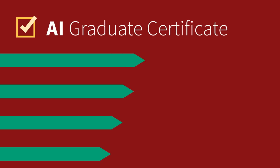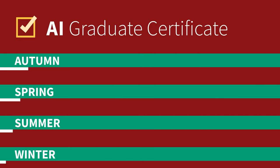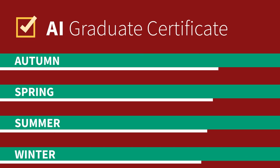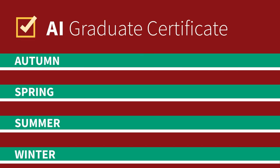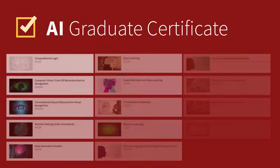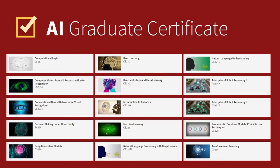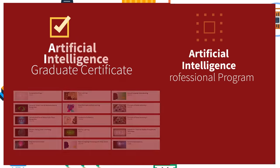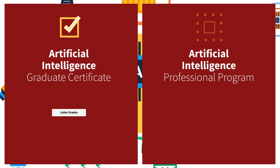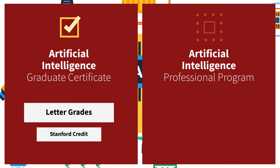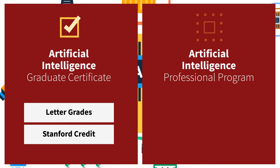Students take graduate courses in the same quarter they are delivered on campus at Stanford, and can pursue topics in-depth, with courses available in areas such as robotics, vision, and natural language processing. Graduate courses award letter grades and students earn Stanford credit.